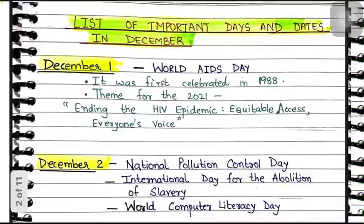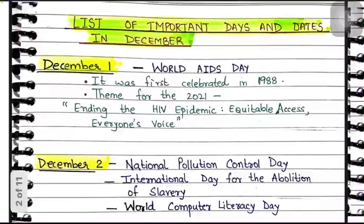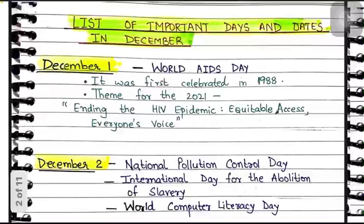December 2 is National Pollution Control Day, which aims to raise awareness about pollution. It is also the International Day for Abolition of Slavery and World Computer Literacy Day. National Pollution Control Day is observed to raise awareness in memory of the people who lost their lives in the Bhopal Gas Tragedy. This calamity was one of the biggest industrial pollution disasters in history.